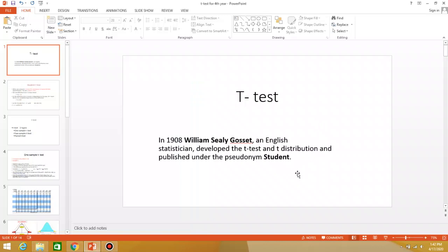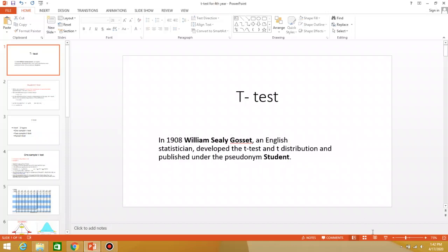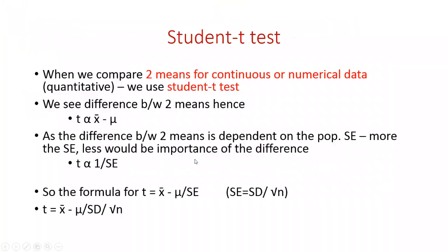For my fourth-year students, I have earlier sent you the t-test and ANOVA lectures in PowerPoint or PDF format. This is an updated version of the t-test lecture. The t-test was developed by William Sealy Gosset, an English statistician. He developed this test in 1908 and published it under the pseudo name 'Student', which is why it is also known as the Student t-test.